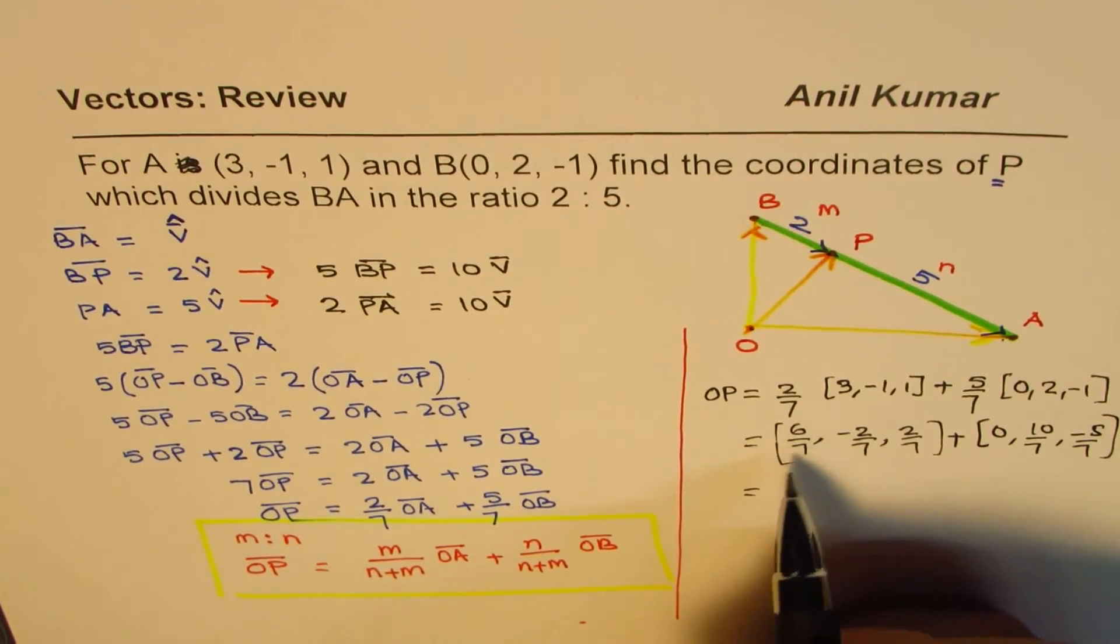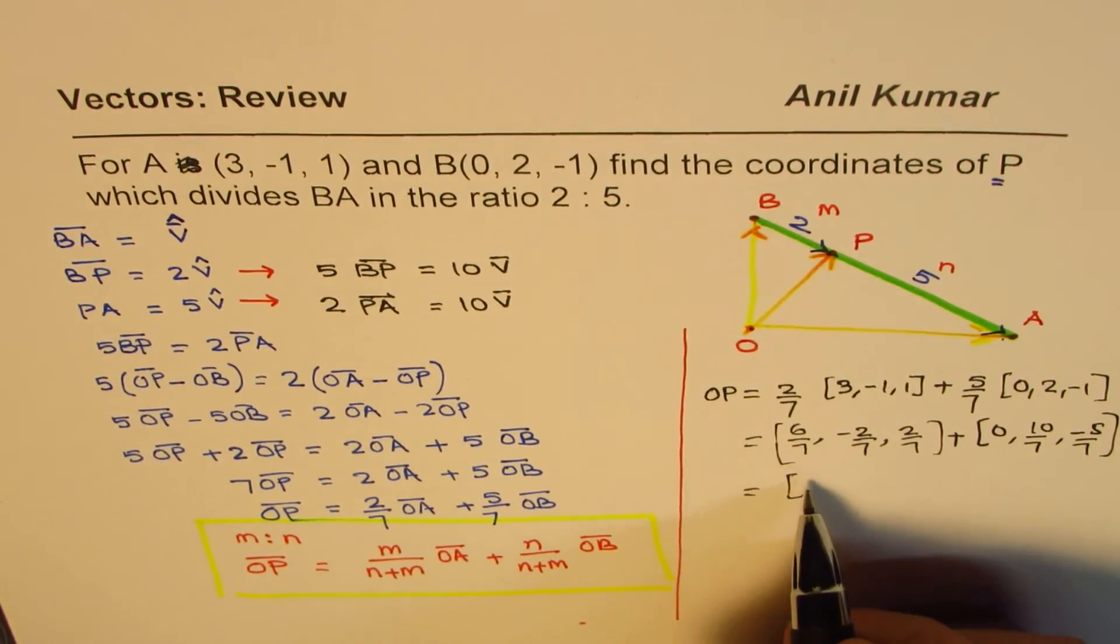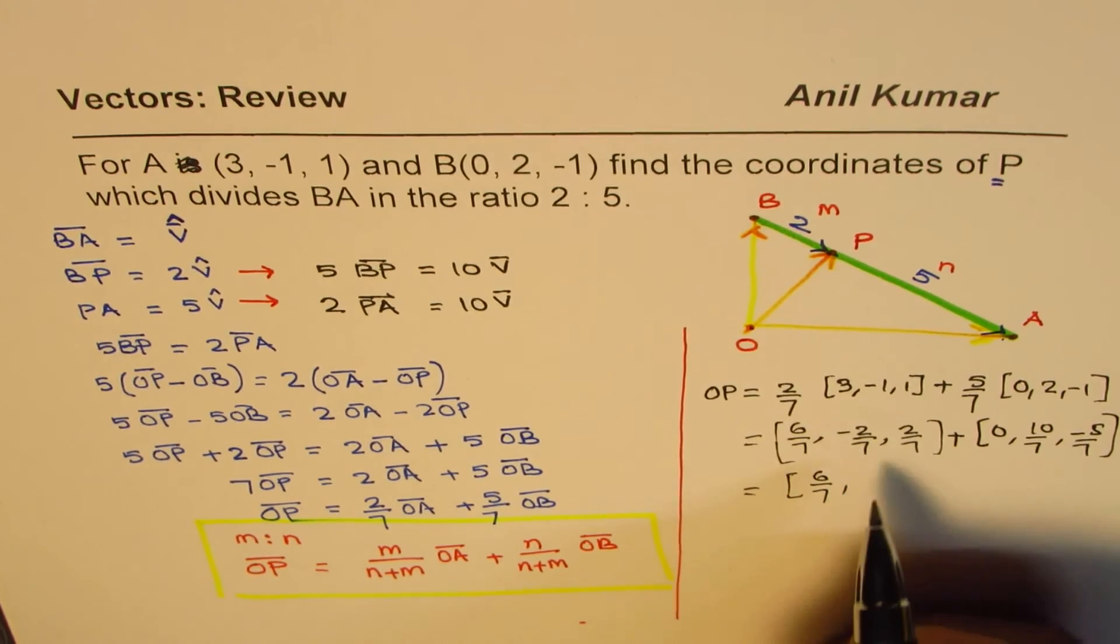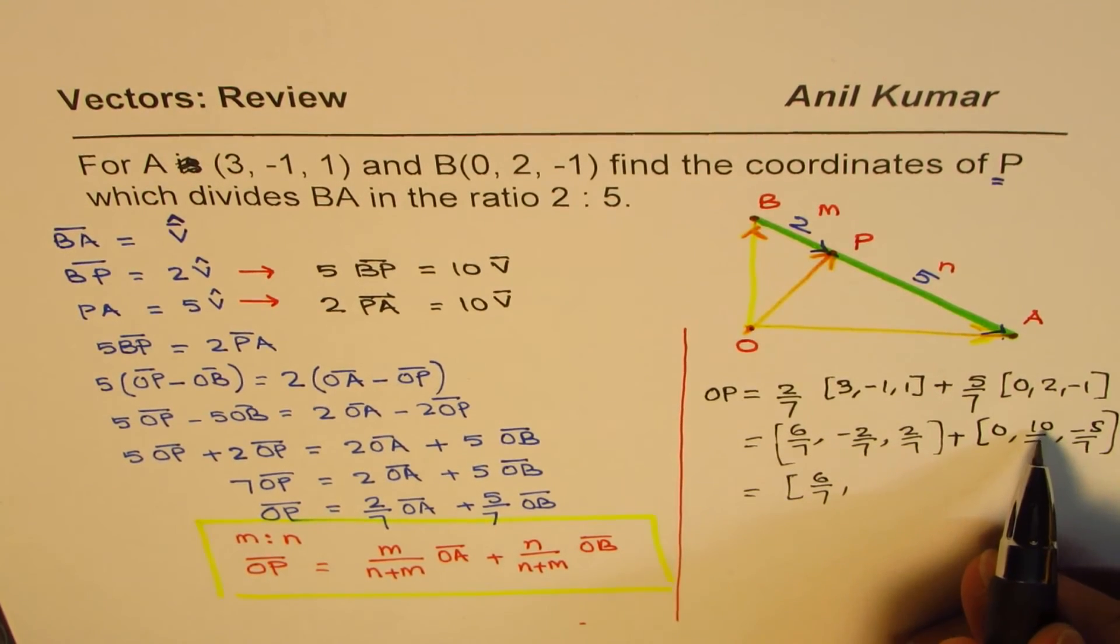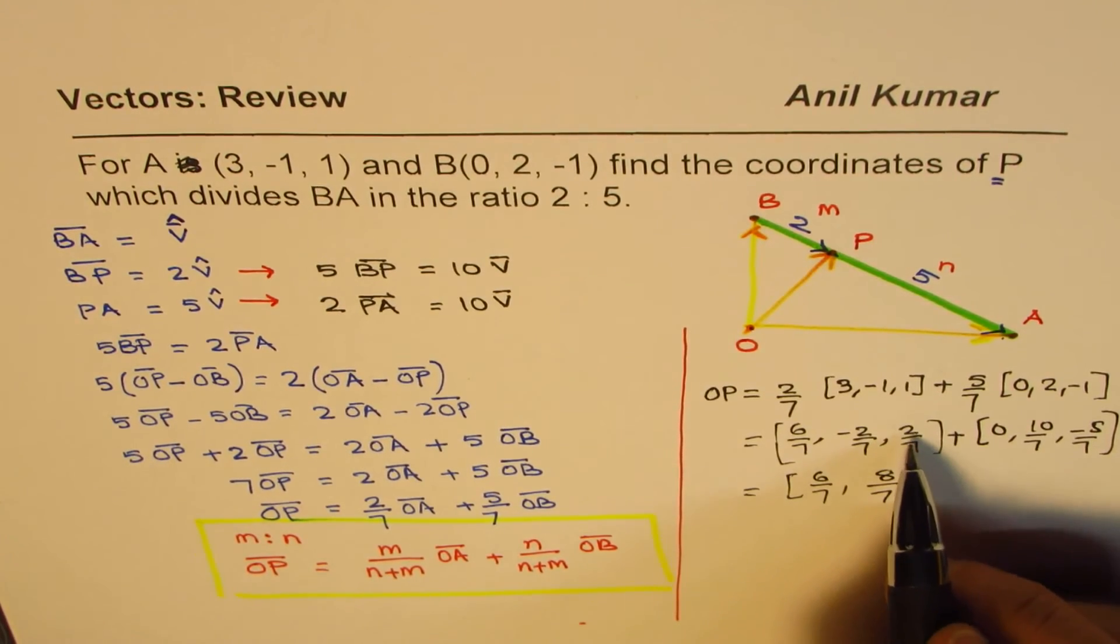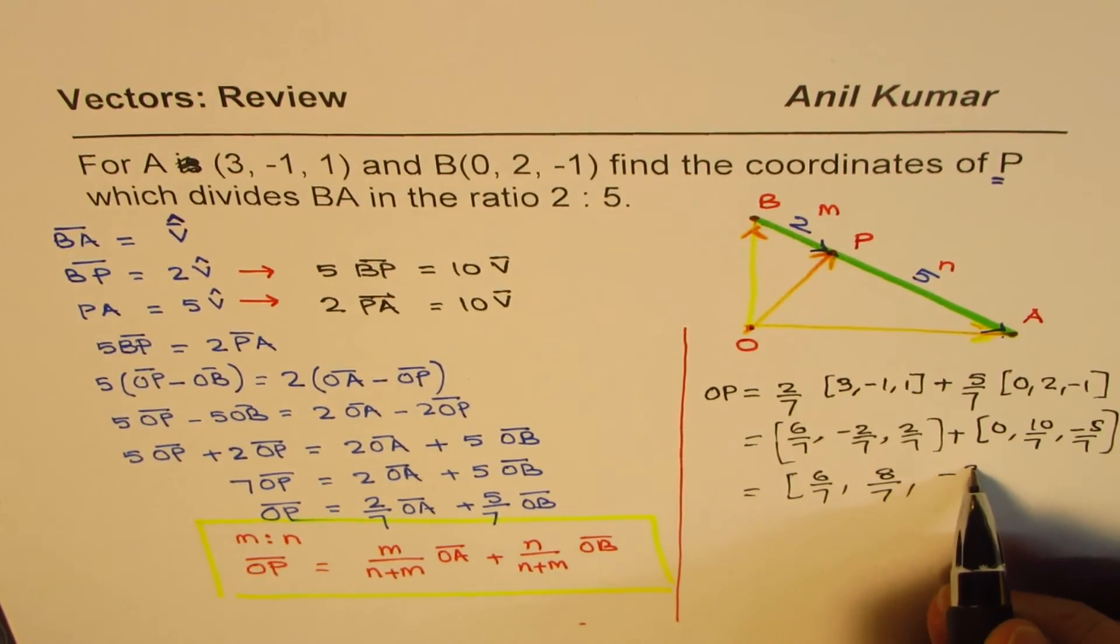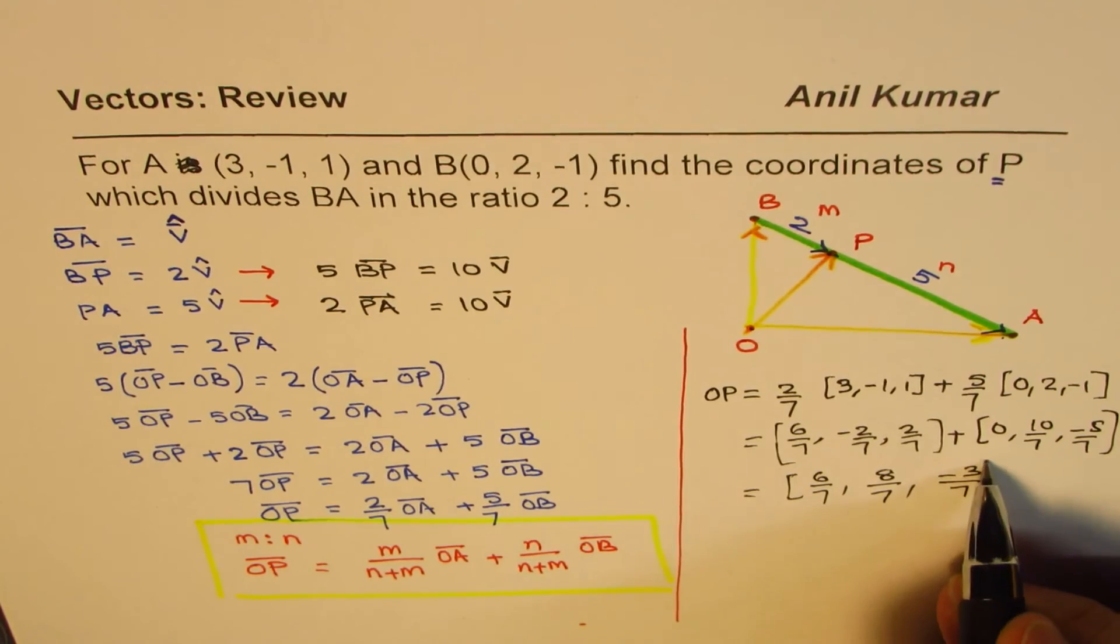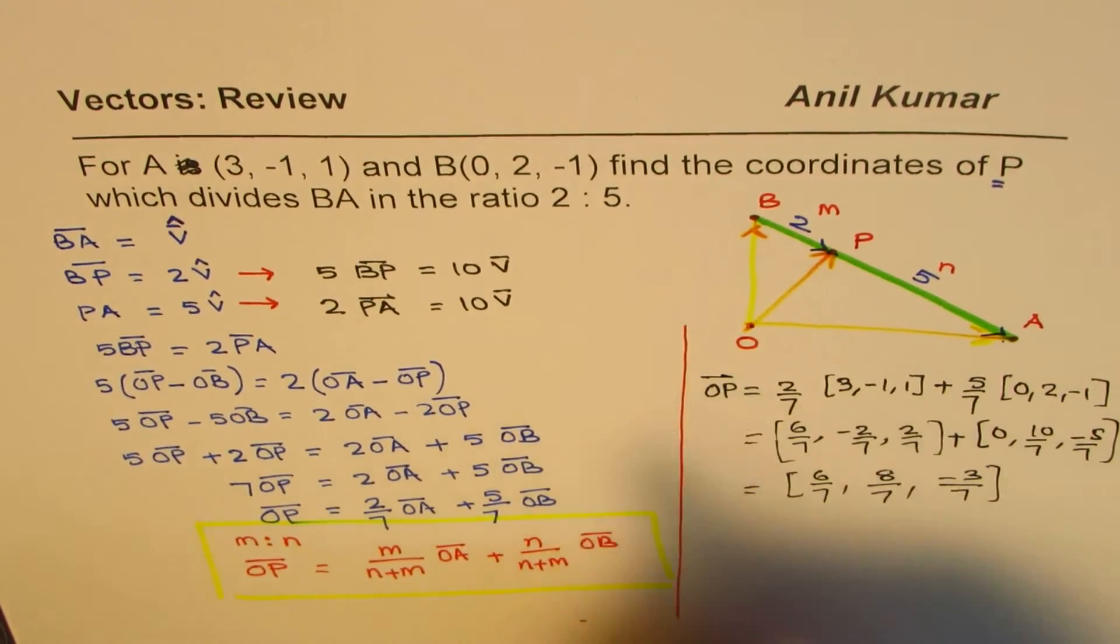Now, we can combine them, so 6 plus 0 is 6, 6 over 7, minus 2 plus 10 gives us 8 over 7, and 2 minus 5 gives us minus 3 over 7. So that becomes the position vector OP.